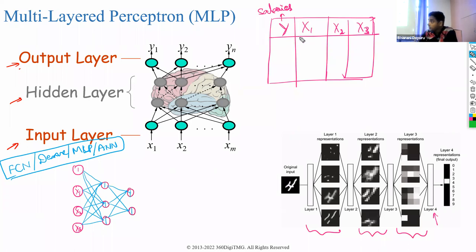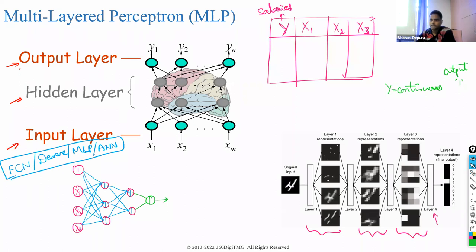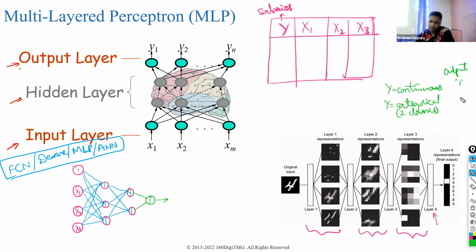Since your output variable is numeric in nature, you will have a single neuron in the output layer with integration and activation components. If your output variable is categorical with two classes, you typically use only one neuron as well.